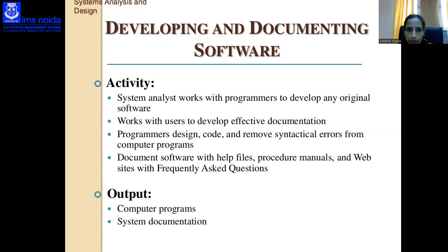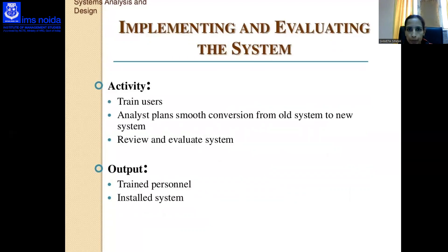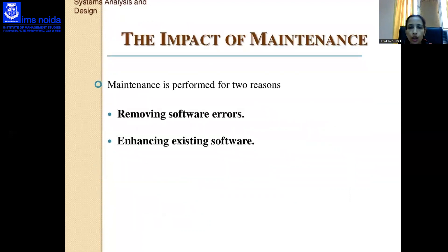Developing and documenting software: the system analyst works with programmers to develop original software and with users to develop effective documentation. Output includes computer programs and system documentation. Testing and maintaining the system involves testing the information system, maintenance, and documentation. Implementing and evaluating the system involves training users, planning smooth conversion from the old system to the new system, and reviewing and evaluating the system.